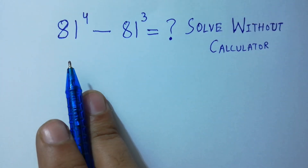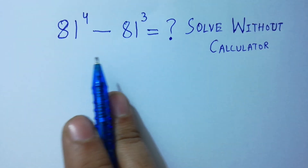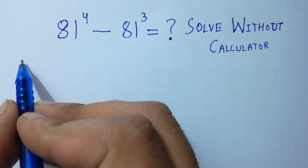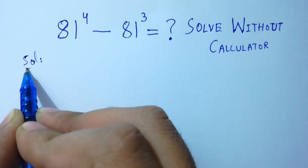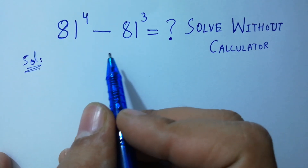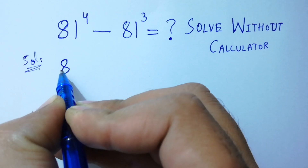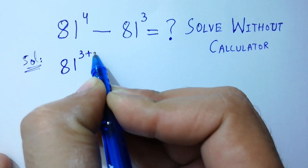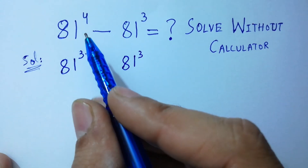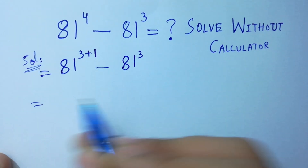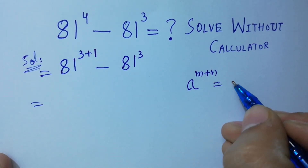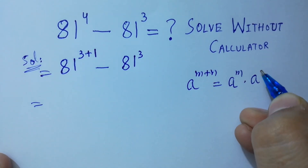Hello friends, can you solve 81 to the power 4 minus 81 cubed without a calculator? Let's solve it. 81 to the power 4 minus 81 cubed is the same as 81 to the power 3 plus 1 minus 81 cubed, because 3 plus 1 equals 4. Since a to the power m plus n equals a to the power m times a to the power n.